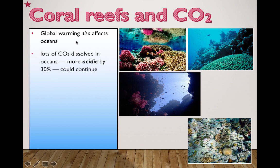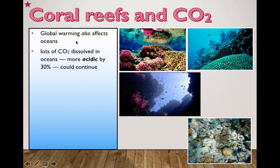Global warming also affects oceans. If you take excess carbon dioxide and dissolve it in water, it makes the water more acidic by up to 30%. It's called carbonic acid when the carbon dioxide dissociates and mixes with H₂O — the water.